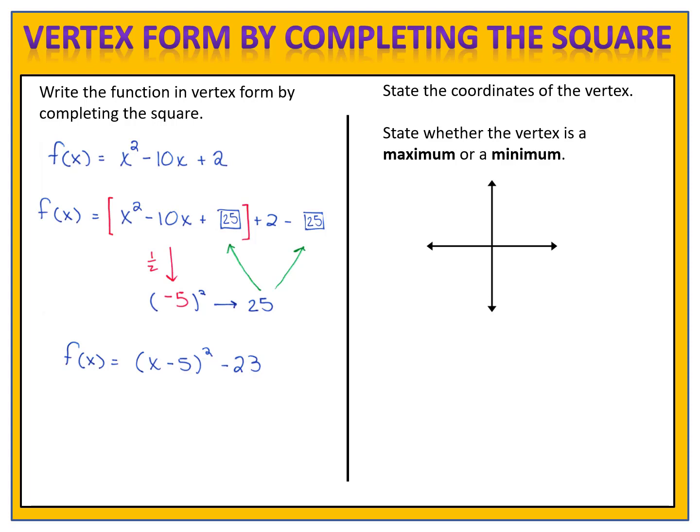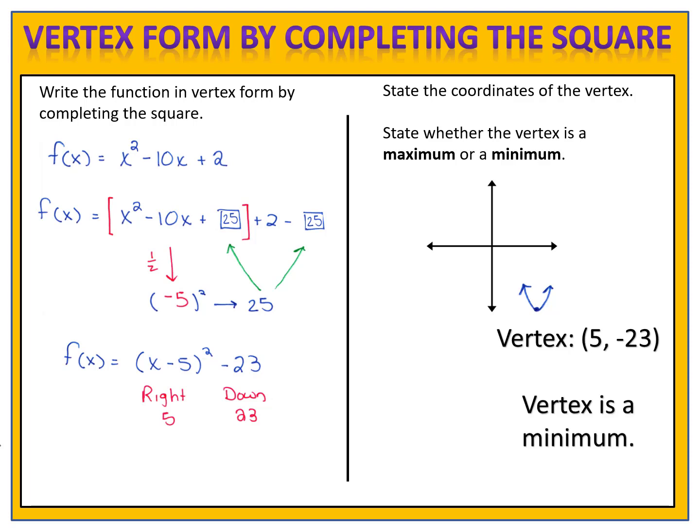We have x minus 5 in the parenthesis, which means the vertex shifted right 5. Minus 23 on the outside means we shifted down 23. Right 5 and down 23 gives us the point 5, negative 23 as the vertex. Because the parabola opens upward, the vertex is the lowest point on the graph, so the vertex is a minimum.